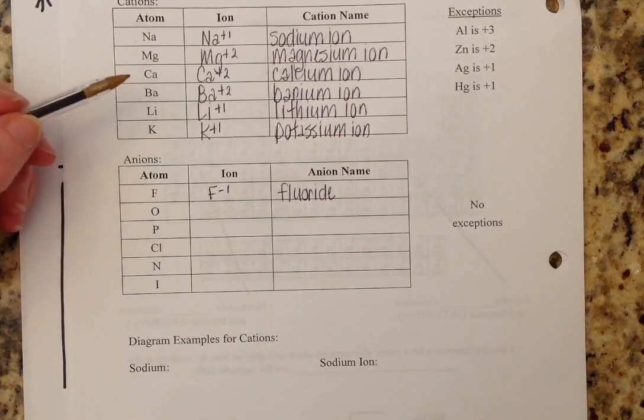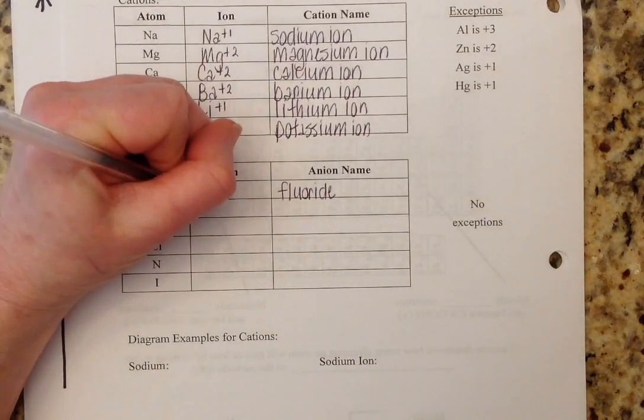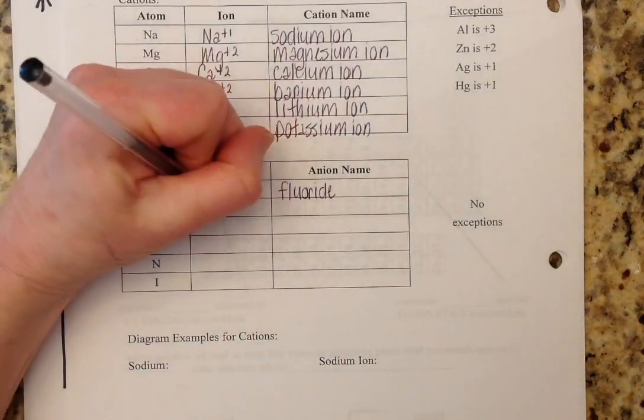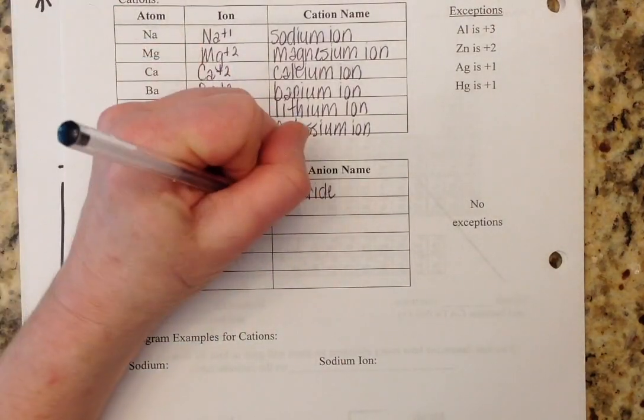Whereas cations, we don't change the ending. Oxygen has a negative two charge. Therefore, oxygen is going to turn into oxide.